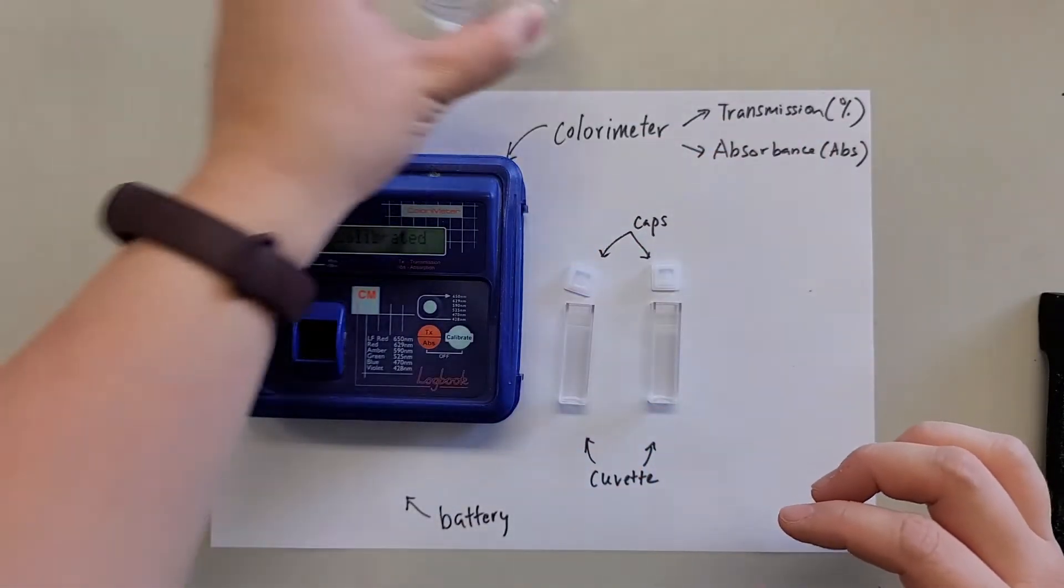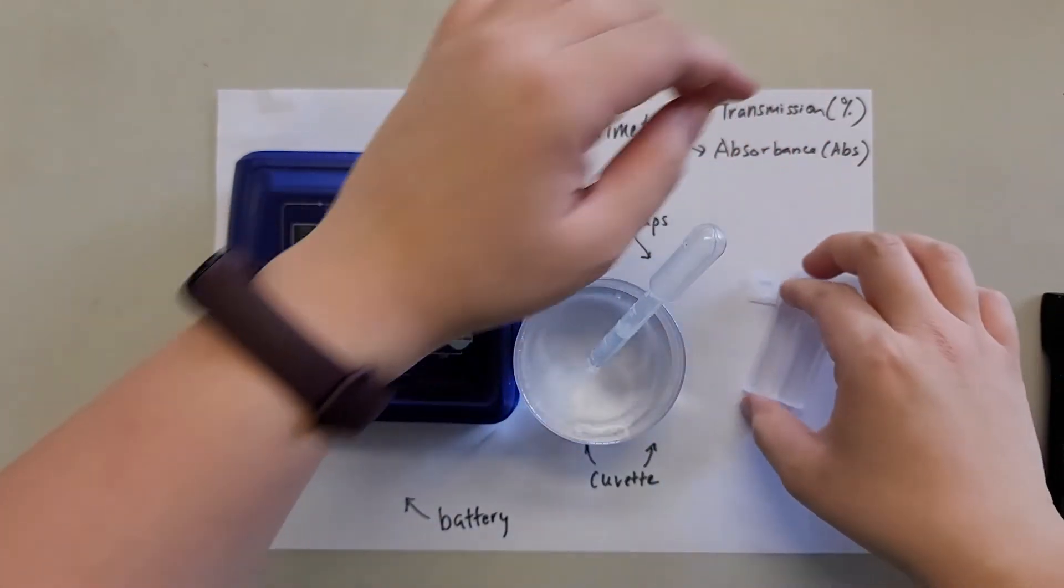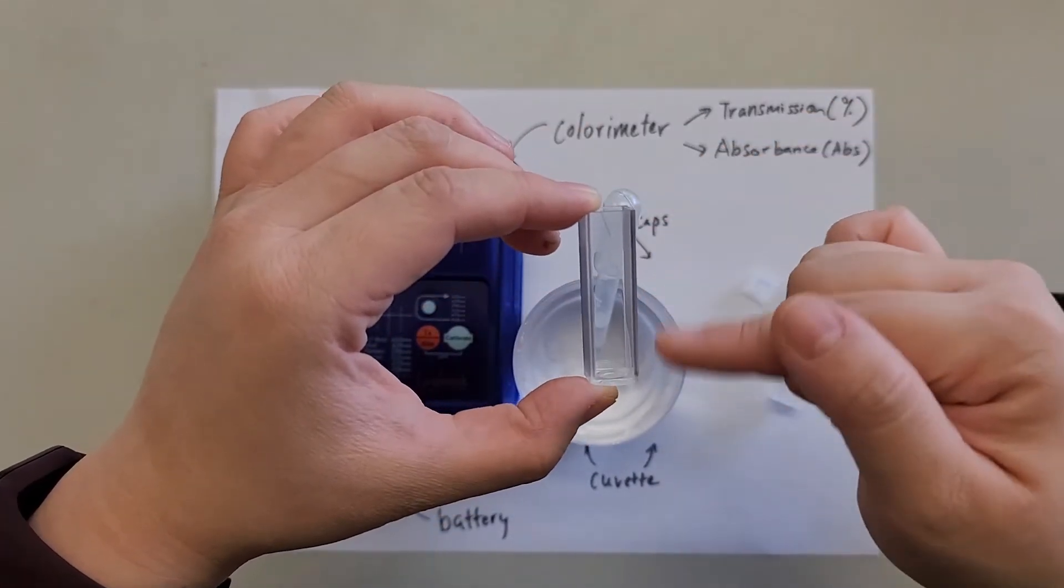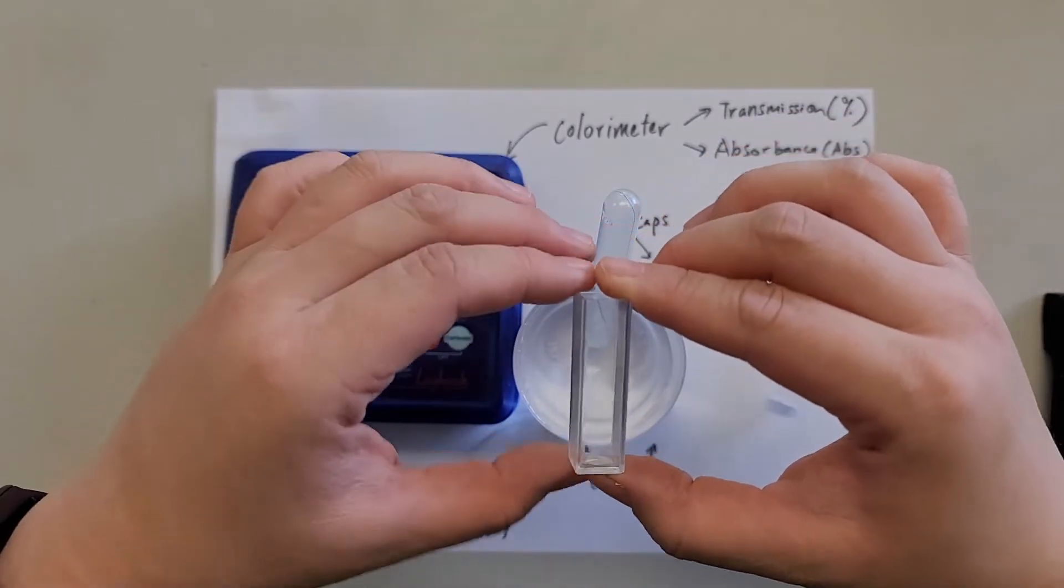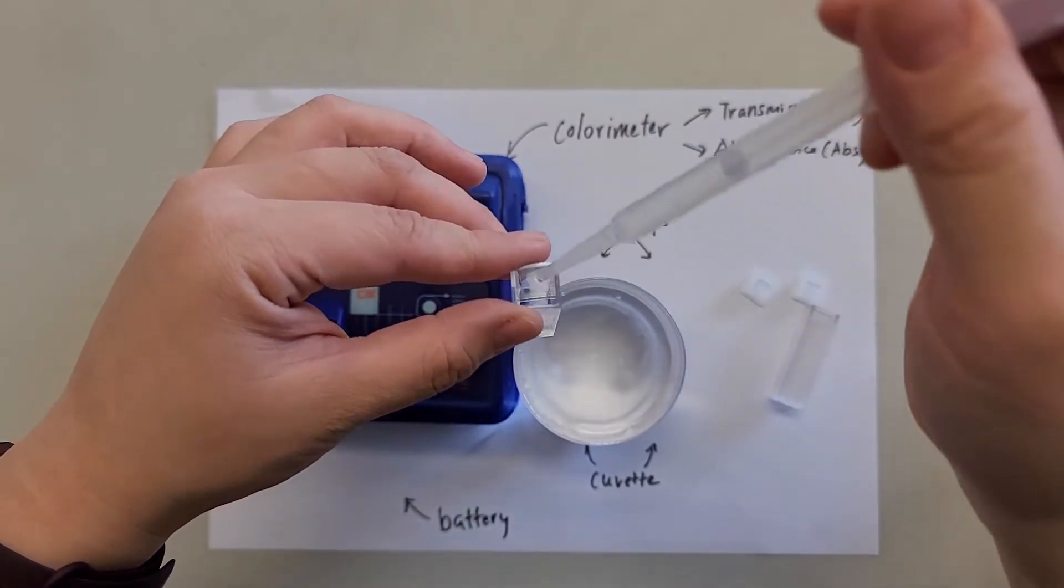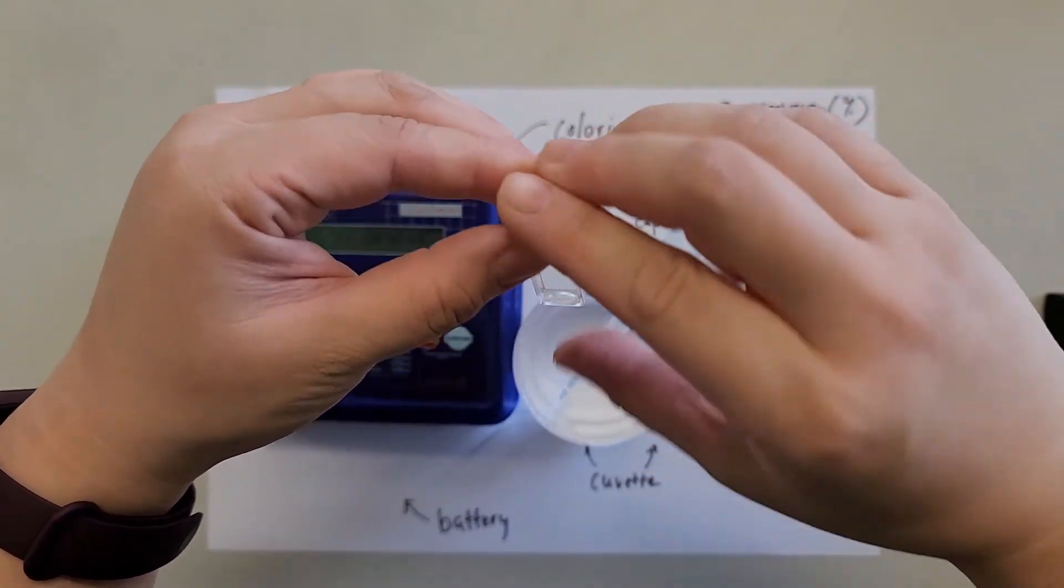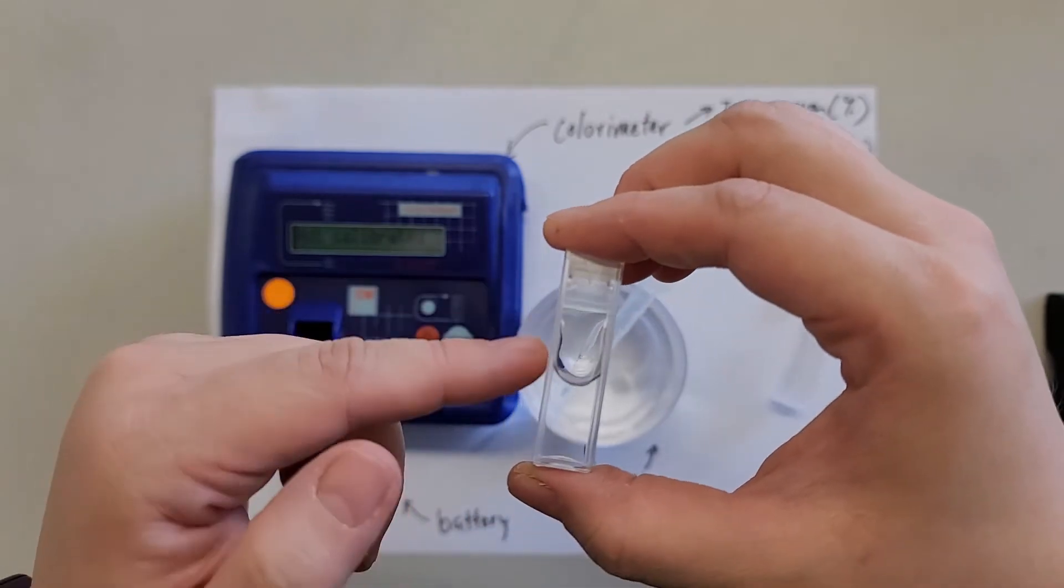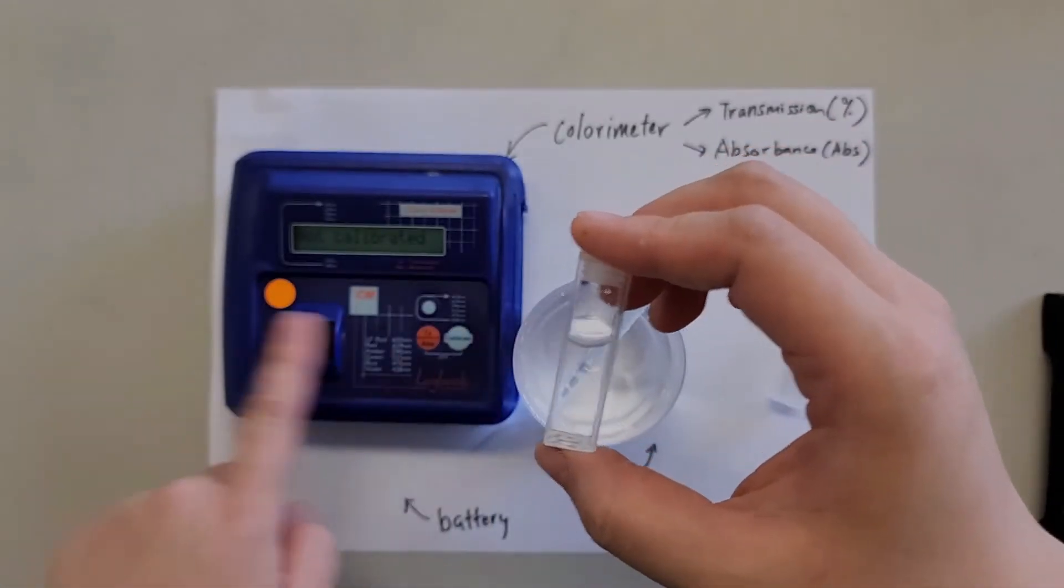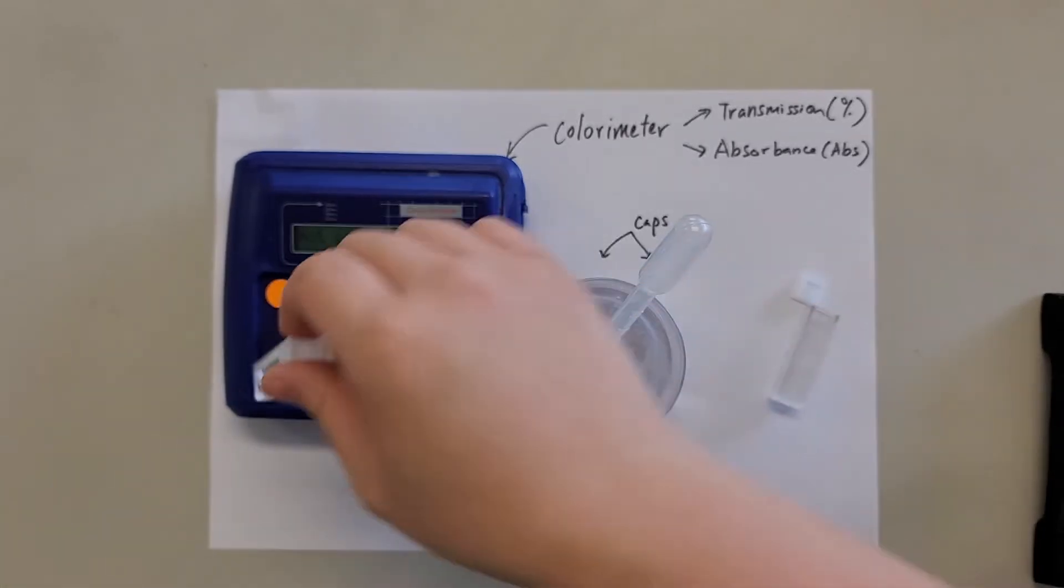We'll have some distilled water here. And then we'll fill it in. Now try to avoid touching the clear region because that's where the light will pass through. About three mils. And then you close it with the cap. Now this side is the clear side and this one is the cloudy side. Make sure the clear side is in the pathway of the light. The light is actually shining sideways.